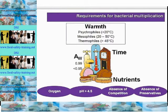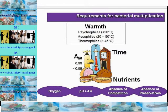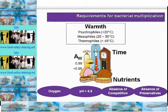Important psychrophilic pathogens include Listeria and Clostridium botulinum type E. Mesophiles prefer 20 to 50 degrees Celsius and include most of the common pathogens that cause food poisoning. Thermophiles prefer temperatures above 45 degrees Celsius and are important in the canning industry, where they can cause blown cans. Psychrotrophs — not shown on the slide — are capable of multiplying below 20 degrees Celsius but prefer above 20 degrees Celsius.